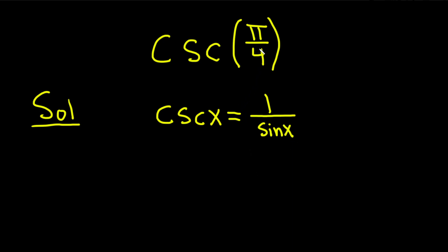So in our case we have pi over 4, so all we have to do is replace the x with pi over 4. So this is the cosecant of pi over 4, and that's equal to 1 over the sine of pi over 4.